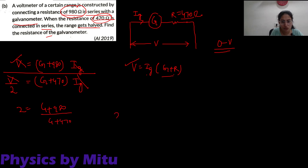This gives 2G + 940 is equal to G + 980. So G is equal to 40 ohm.